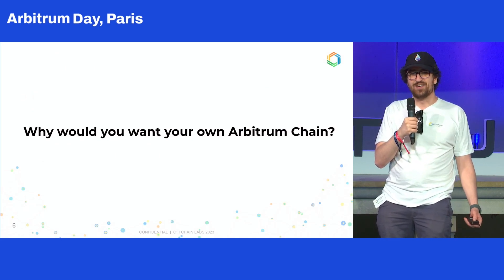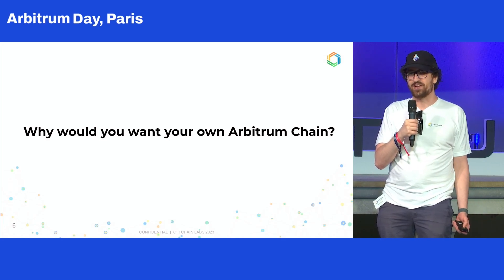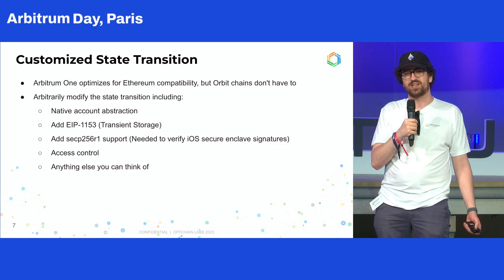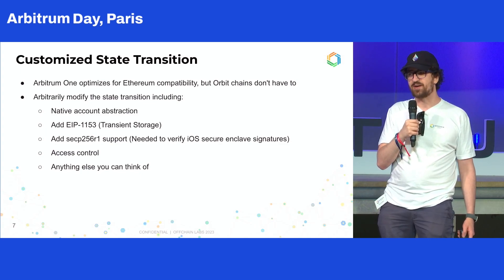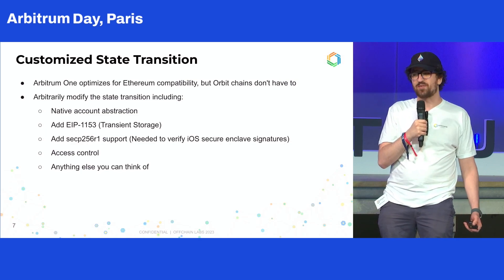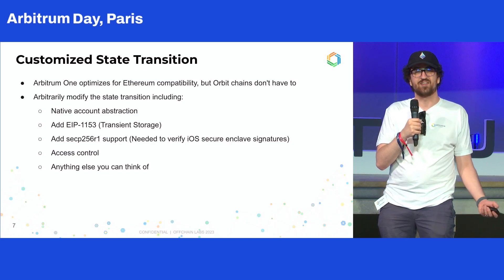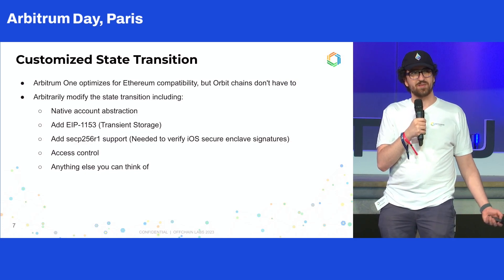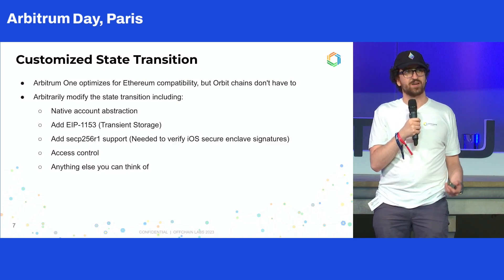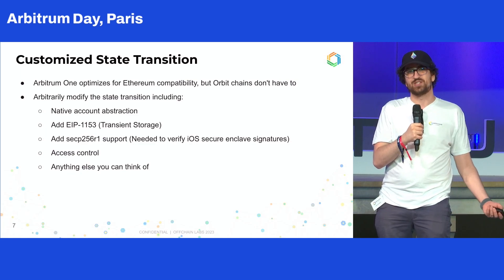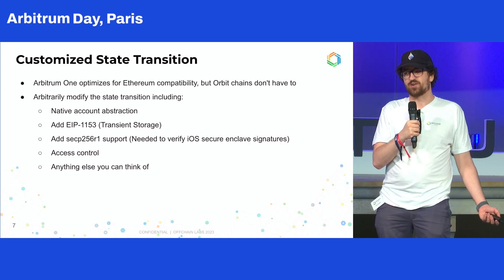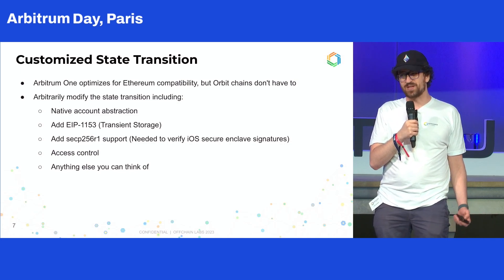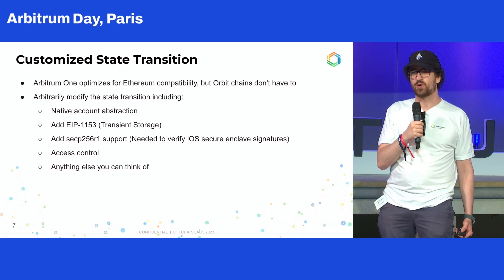So, why would you want to have this whole separate chain if you could just deploy on an existing one? There are a number of pretty cool advantages to having your own chain that we think are going to be really interesting for protocols to explore. One kind of out-there, interesting one is the fact that you can arbitrarily customize the software to do whatever you want. Arbitrum One has been very much guided by Ethereum compatibility and EVM equivalence, but that by no means has to be true for an Orbit chain, which is just using the tech and can do whatever it wants.